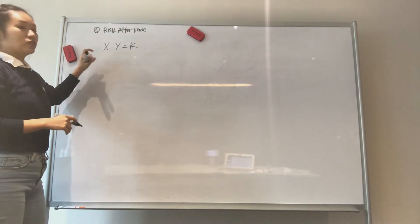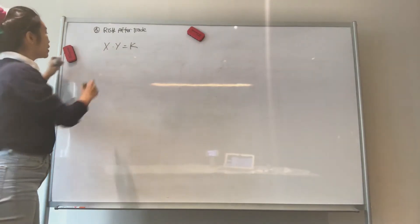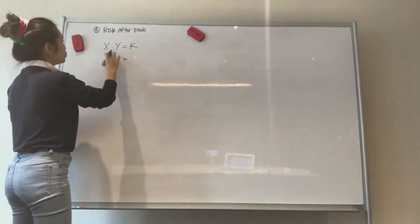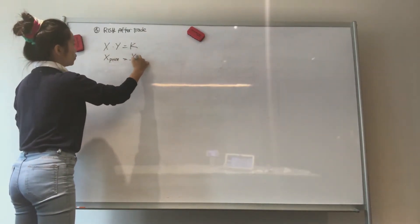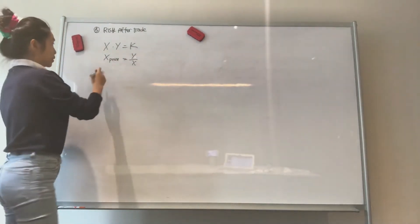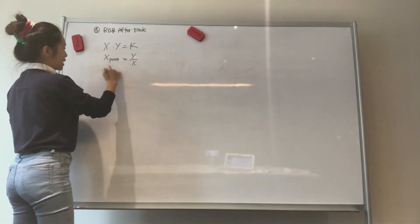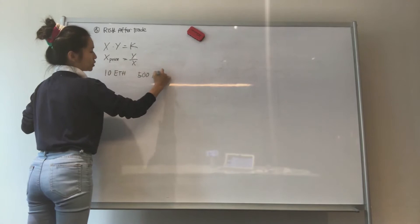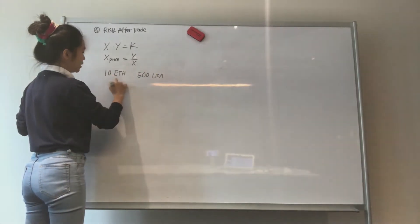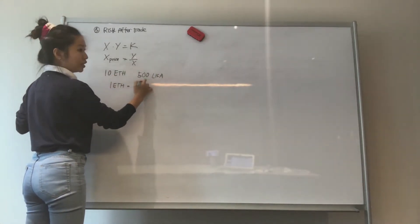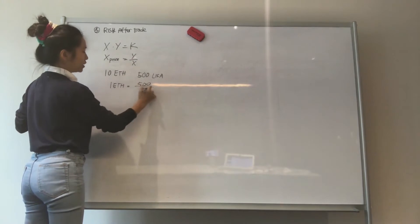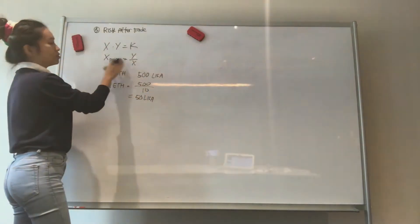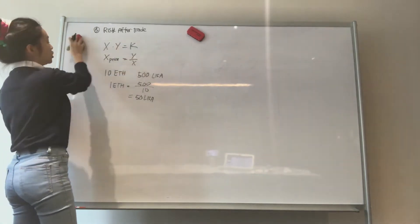And what did we talk about just now? We said that the price of x in terms of these two assets is really just y over x. Remember, if we had like 10 ETH and 500 LISA tokens, the price of 1 ETH is really just 500 LISA tokens divided by 10, which equals 50 LISA tokens. So this price is really the price in relation to each other.